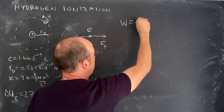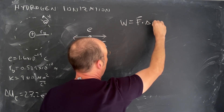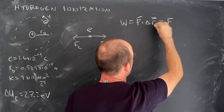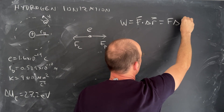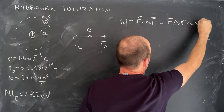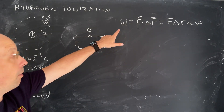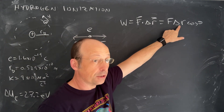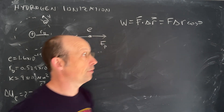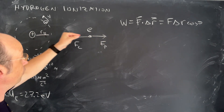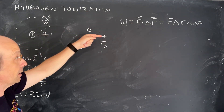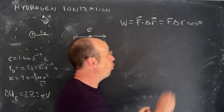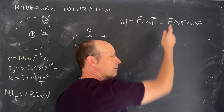A lot of times we see work as F · ΔR, where those are vectors, or equivalently F × ΔS × cosθ. The work done on a particle, if the force is constant, is the force times the displacement times the cosine of the angle between them. In this case, if I'm moving this way and pushing in the same direction, the work is going to be positive. But this only works if the force is constant — which it's not.